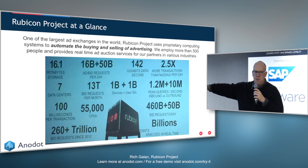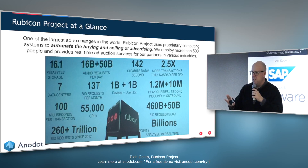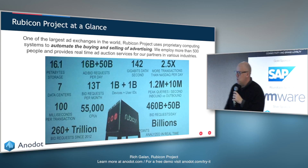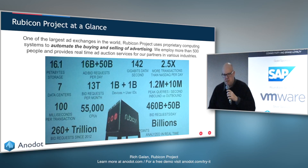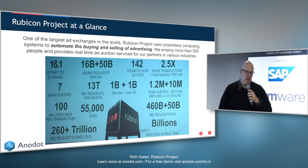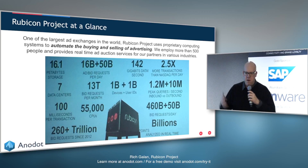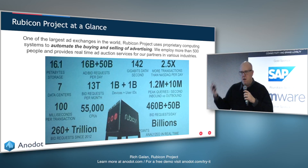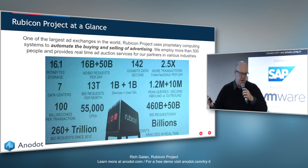We do two and a half times more transactions than Nasdaq, and we do more transactions than Visa in a day. We're analyzing a lot of data — it's a supply and demand business. We have over 700 partners on our supply side and 200-plus partners on our demand side.